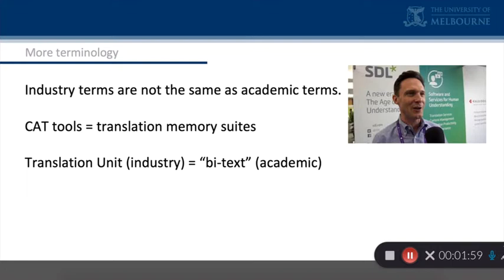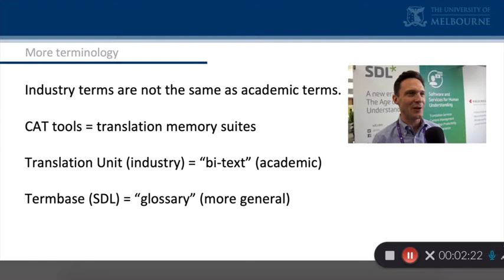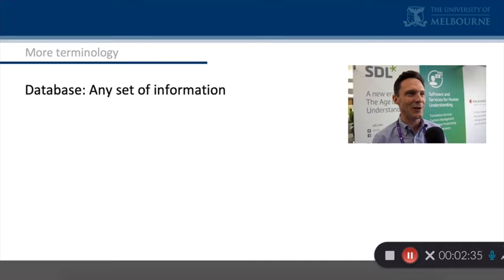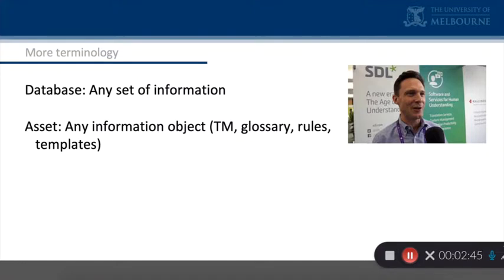You just have to be aware that there are different senses in those two different fields. For what they're calling the translation unit, I prefer to use an old term proposed by Brian Harris many years ago: by-text. By-text is the ST-TT union that goes into the translation memory database. Similarly, what SDL calls a term base — which is fine, it's just a list of terms — I tend to call a glossary. No real difference, just two different names. Database is a very general term; I have no problem with that.